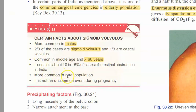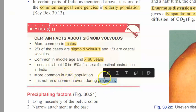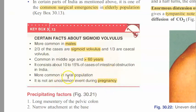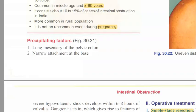Out of all intestinal obstructions, 10 to 15 percent of cases will be volvulus of the sigmoid colon. It is more common in the rural population, and it can even happen during pregnancy - not just in old men. Because of the uterus, there can be sigmoid volvulus during pregnancy as well.